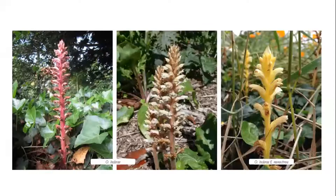Orobanche hederae, the ivy broomrape, is often thought of as scarce but is actually quite a common plant. It grows in all sorts of environments, is often planted as a curiosity, and has spread to towns and cities. It's particularly common in the Bristol area and the southwest. Occasionally you get yellow forms, and moving further east there are some large populations of the yellow form, forma monochroa.